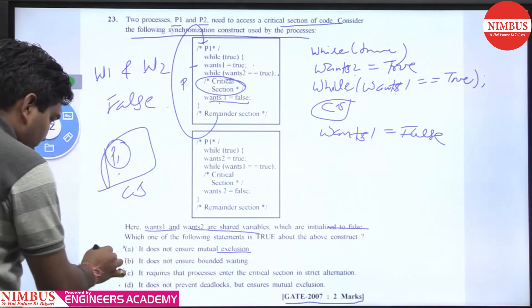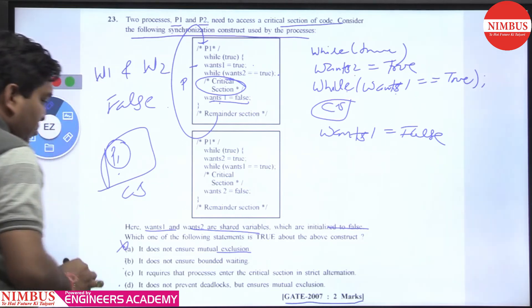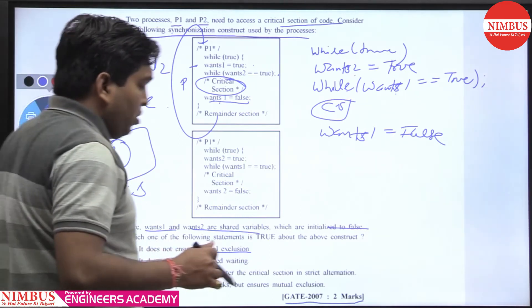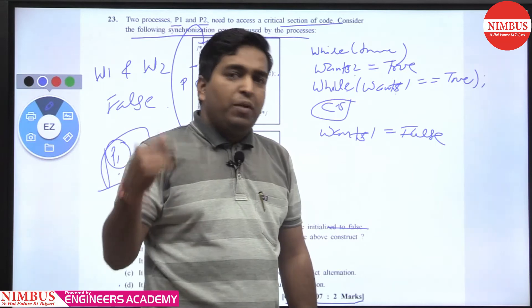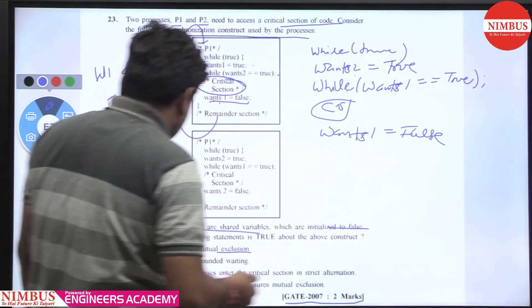First of all, it does not ensure mutual exclusion is wrong, because mutual exclusion is ensured when we allow 2 processes, then only one process enters into the critical section.